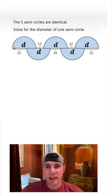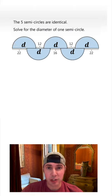I know that the distance is the same whether I measure from the top or the bottom, so I'm going to set those two things equal to each other. So we have 3d plus 2(12) is going to be equal to 2d plus 2(22) plus a single 16.